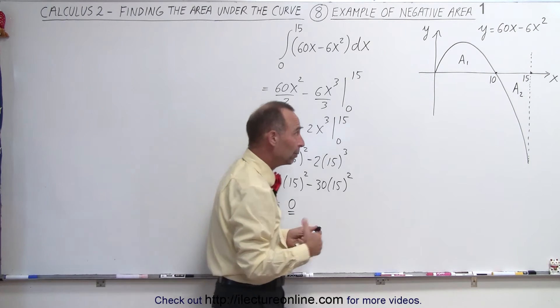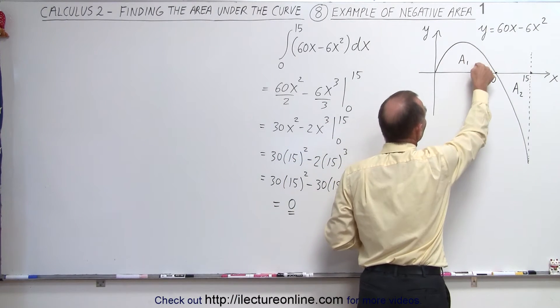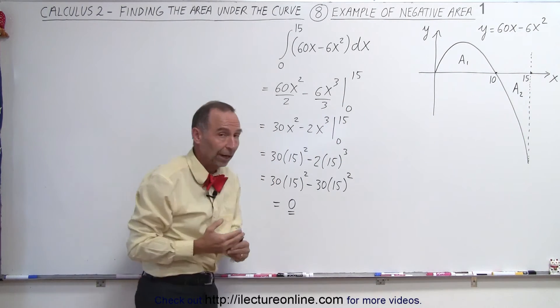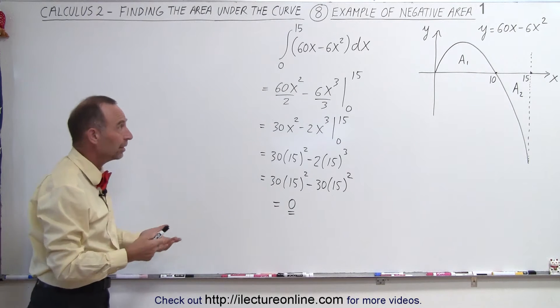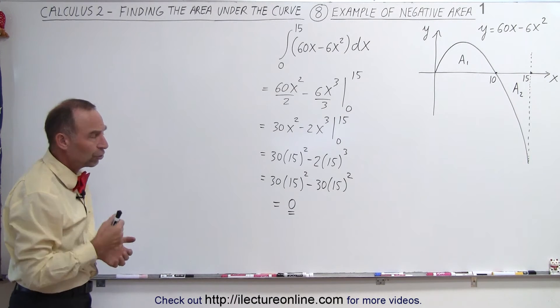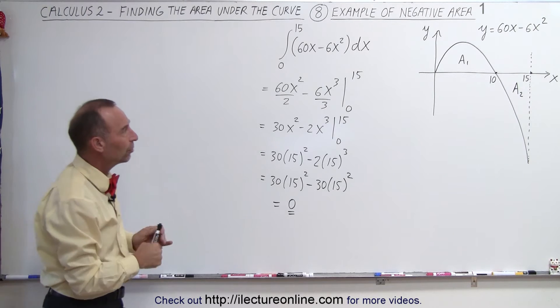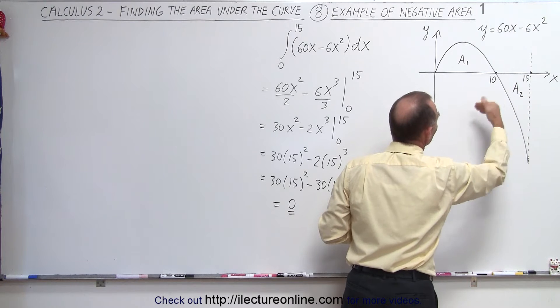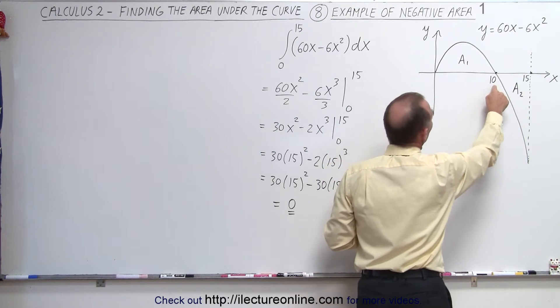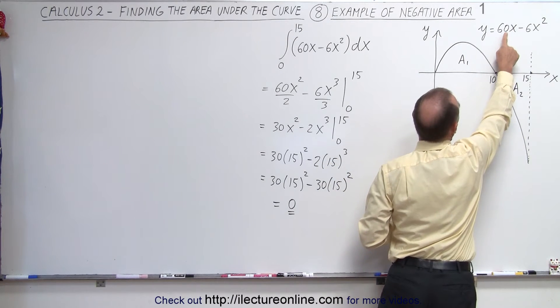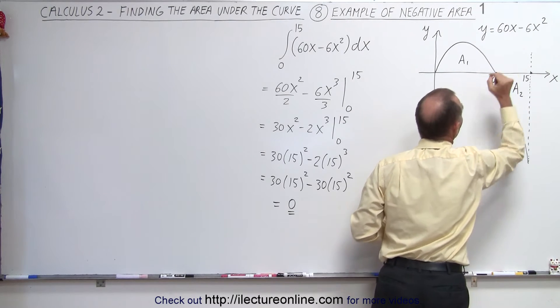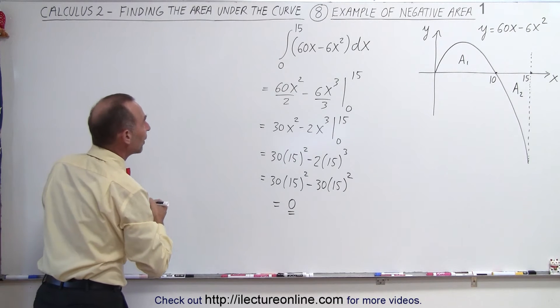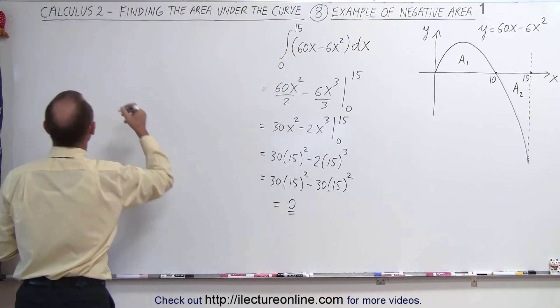Once we draw it out, we probably realize that A1 being positive area and A2 being negative area are probably equal in size and they cancel each other out. And therefore the net area is equal to 0. To show that that's true, let's go ahead and do two separate integrals. We first are going to integrate from 0 to 10 and then from 10 to 15 and see what we get in each case. Notice that if you plug in 10 for x, we get 600 minus 600, which is 0. That means that's the point where the curve crosses the x-axis. So let's go ahead and integrate the integral from 0 to 10 and see what we get.